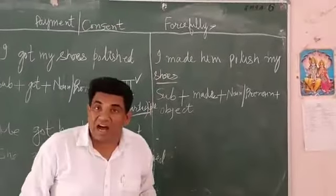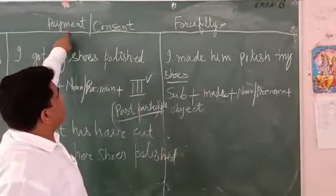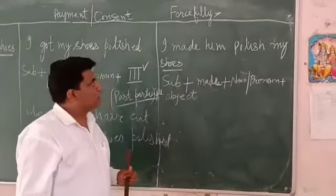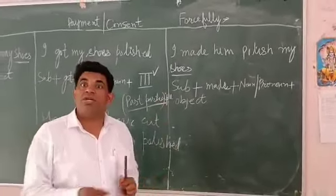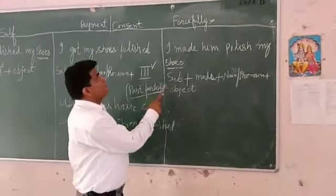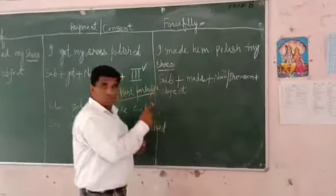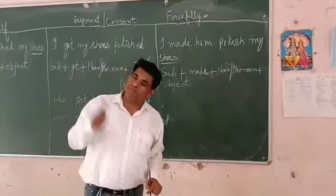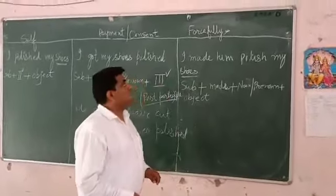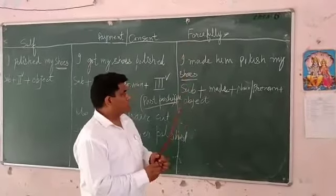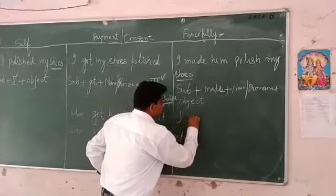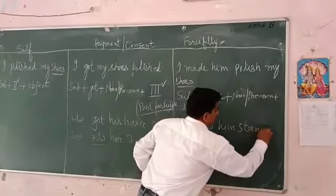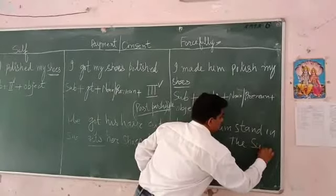Now the third structure — when we get our work done without payment or consent, by forcing or compelling the person. For example: 'I made him polish my shoes.' This means he didn't want to polish my shoes; I compelled him, I forced him to do it.